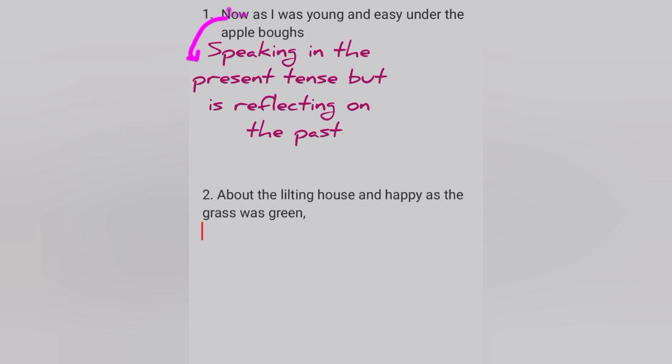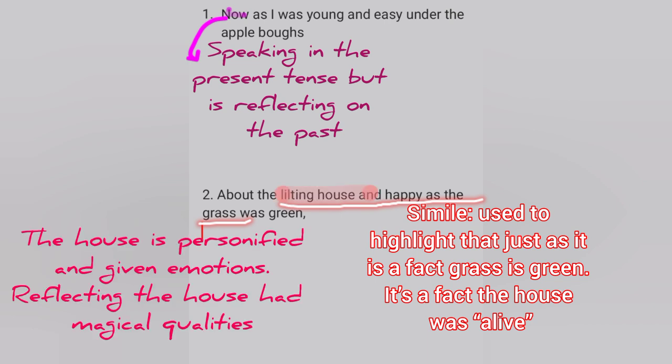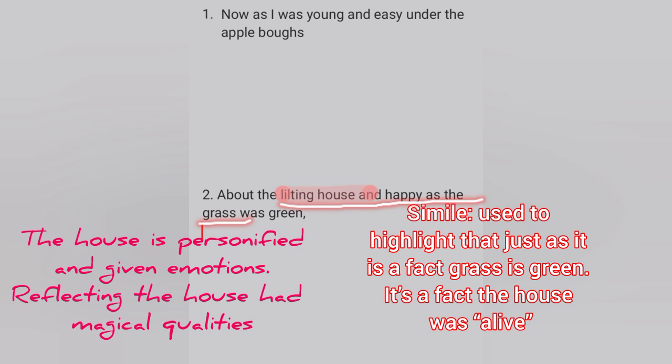Thomas is describing his surroundings on a typical day at his aunt's farm. In line two, we get a simile used to highlight that just as it is a fact that grass is green, it is a fact the house was alive. The simile is 'letting house and happy as the grass was green.' We also get a personification of the letting house — the house is personified and given emotions.